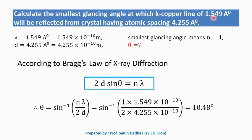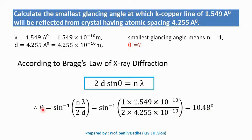Problem 3: Calculate the smallest glancing angle at which the K copper line of 1.549 angstroms will be reflected from a crystal having atomic spacing 4.255 angstroms. λ = 1.549 Å, d = 4.255 Å. Smallest glancing angle means n = 1, since theta is minimum when n is minimum. Using θ = sin⁻¹(nλ / 2d) with n = 1, d = 4.255 Å, λ = 1.549 Å, we get θ = 10.48°.